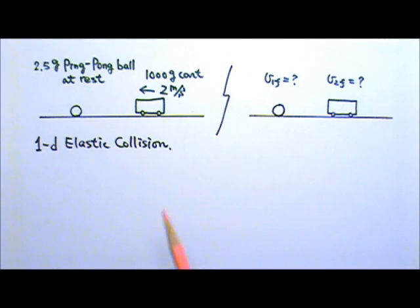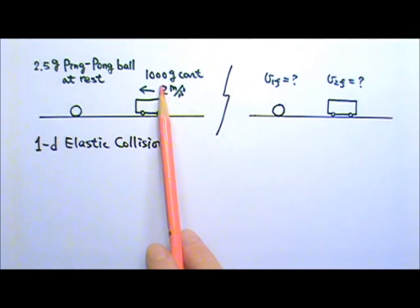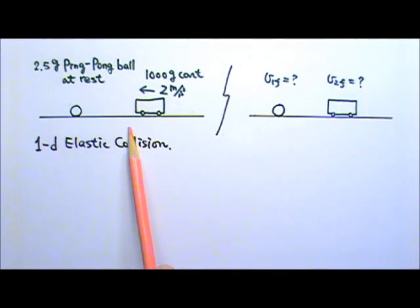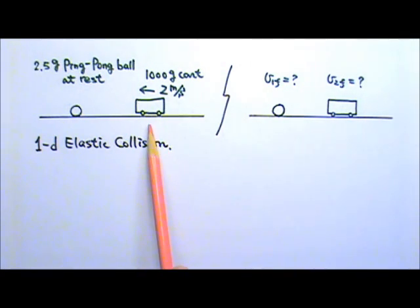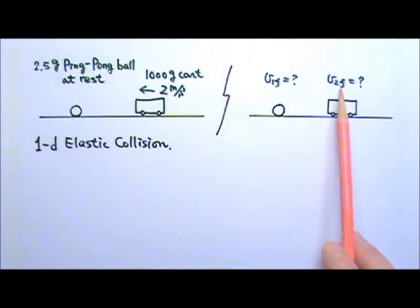Now let's try another problem. A 1kg cart traveling at 2 meters per second collides with a 2.5g ping-pong ball at rest. 1kg is 400 times 2.5g, so it is not unreasonable for us to say that the cart is almost unaffected by the ping-pong ball. If this collision is a one-dimensional elastic collision, what are the final velocities at the end of the collision?